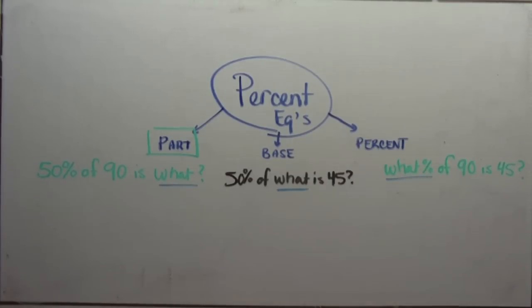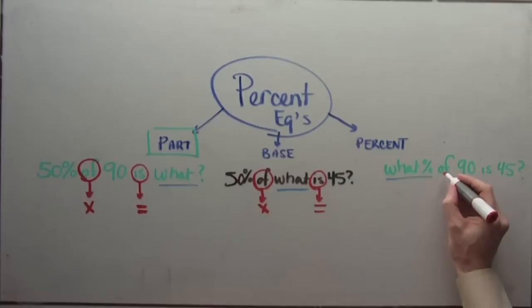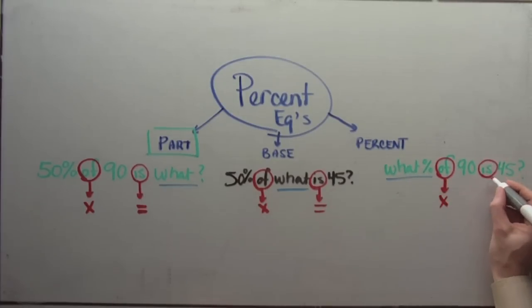But the way that you approach them is exactly the same. You can get away with just basically knowing the equivalence of of and is. Of, again, is always what? Well, for percent equations, at least they're multiplication. And is is always equals. The same for the base equations. Of is multiplication. Is is equals. And for percent equations. Of multiplication. Is equals.